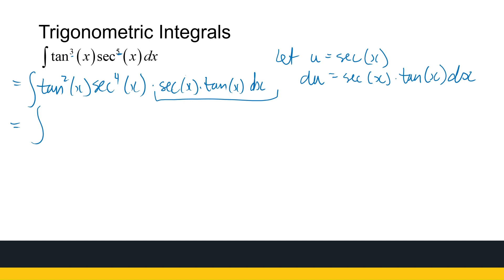Now let's change our tan to sec because we want everything in terms of sec. We know tan² plus 1 is sec². So tan² is sec²(x) minus 1 times sec⁴(x). And this I'm just leaving here for now. I haven't made any substitution yet, but I know what the purpose of the sec tan dx is.